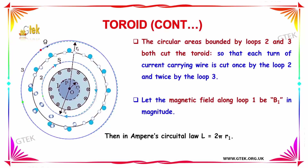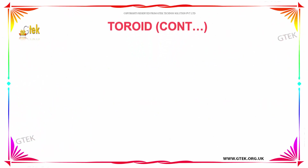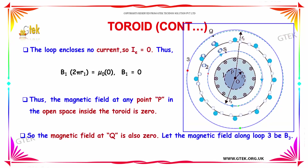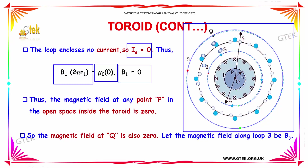Let the magnetic field along loop 1 be B1 in magnitude. From Ampere's circuital law, L is equal to 2π R1. The loop encloses no current, so the enclosed current IE is equal to 0. Therefore B1 × 2π R1 = μ₀ × 0, giving B1 = 0. Thus the magnetic field at point P in the open space inside the toroid is 0, and the magnetic field at Q is also 0.